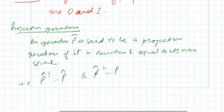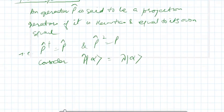To prove that eigenvalues of projection operator are 0 or 1, let us consider that P operating on ket alpha gives lambda times ket alpha, where lambda is the eigenvalue. And if I operate again with the P operator on both sides...